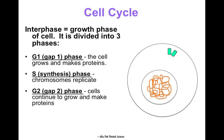Then Gap 2 happens — the cell continues to grow and make proteins. We're actually doubling the amount of organelles that exist so that when the cell divides, every cell gets a Golgi and every cell gets ER. When you look at the picture, all we have is a nucleus with DNA and centrioles pictured — all the other organelles are there, but it would make the picture really complicated. We really just want to see the key players in cell division, which are the nucleus and the centrioles.